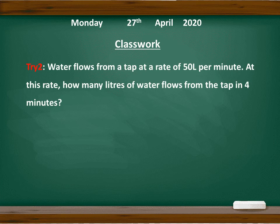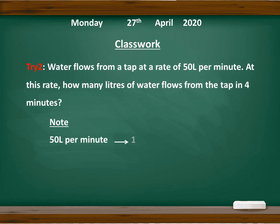Now go to try two: Water flows from a tap at a rate of 50 liters per minute. At this rate, how many liters of water flow from the tap in four minutes? Take note: 50 liters per minute means one minute the water can flow 50 liters. They ask about four minutes — how much water can flow? So it means four times of it. Which operation talks about times? You can use that operation to find the answer.